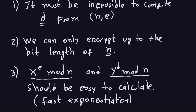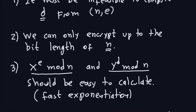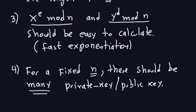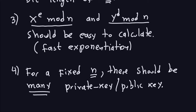Since encryption and decryption involve exponentiation, we need a way to compute this easily and fast. We need fast exponentiation for RSA because communication needs to be pretty fast. Another requirement is that for a fixed N there should be many possible private and public key pairs.